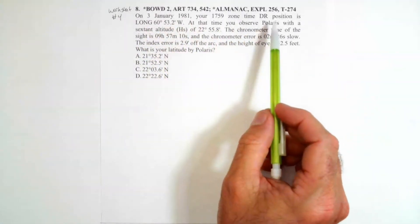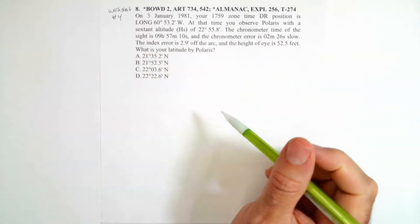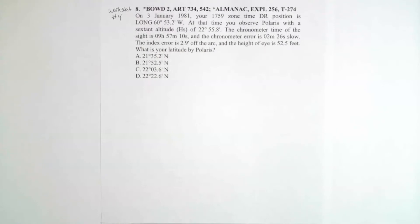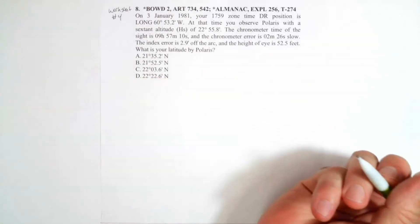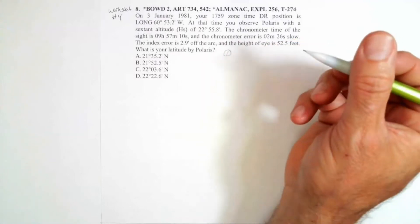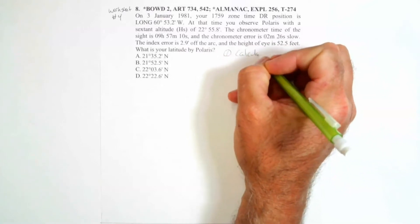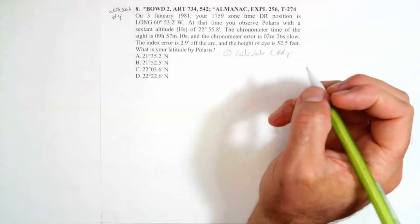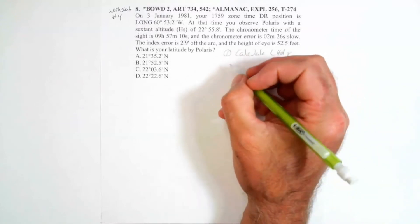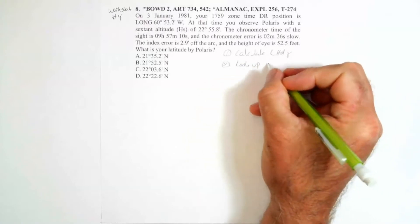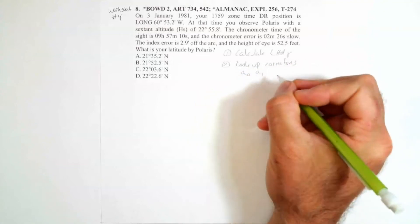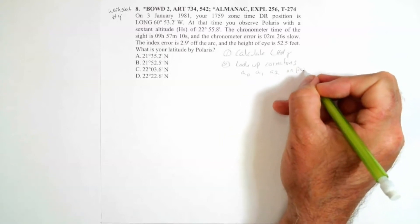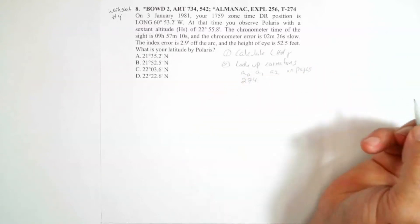Here's the data, and they're asking us to determine the latitude of Polaris. The first thing we're going to need to do is calculate the LHA of Aries. After we get the LHA of Aries, we're going to have to look up corrections — specifically the A0, the A1, and the A2 corrections on pages starting at page 274 of the Nautical Almanac.